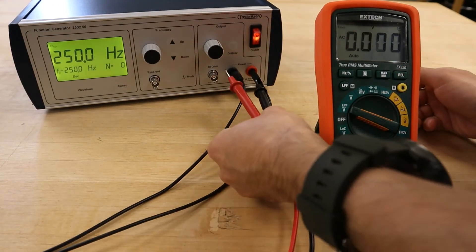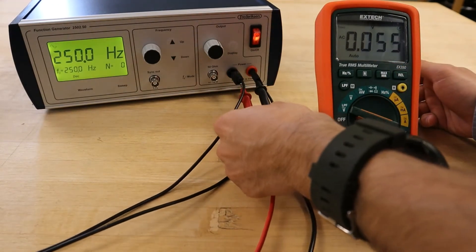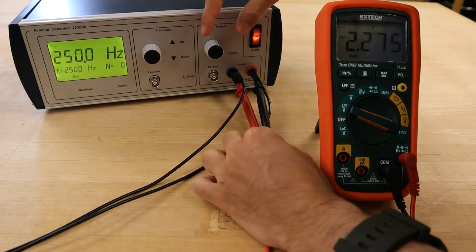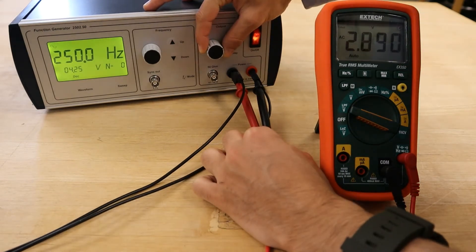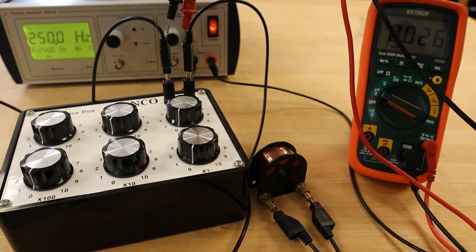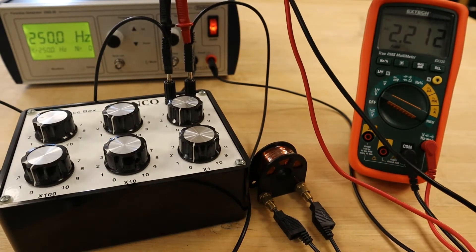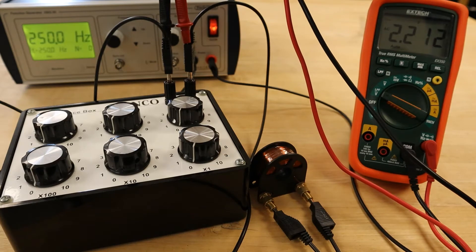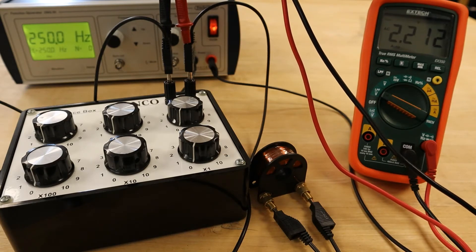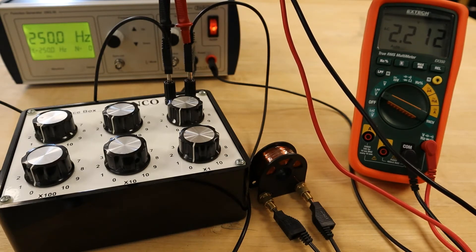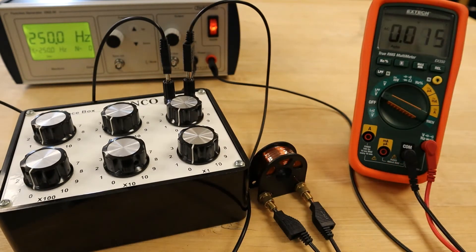To set the amplitude, we will use the DMM to measure the RMS voltage, setting this value to 3 volts as before. Once more, the voltage across the decade resistor will be determined using the DMM, and then the RMS current, impedance, reactance of the inductor, and the inductance of the inductor can be calculated.